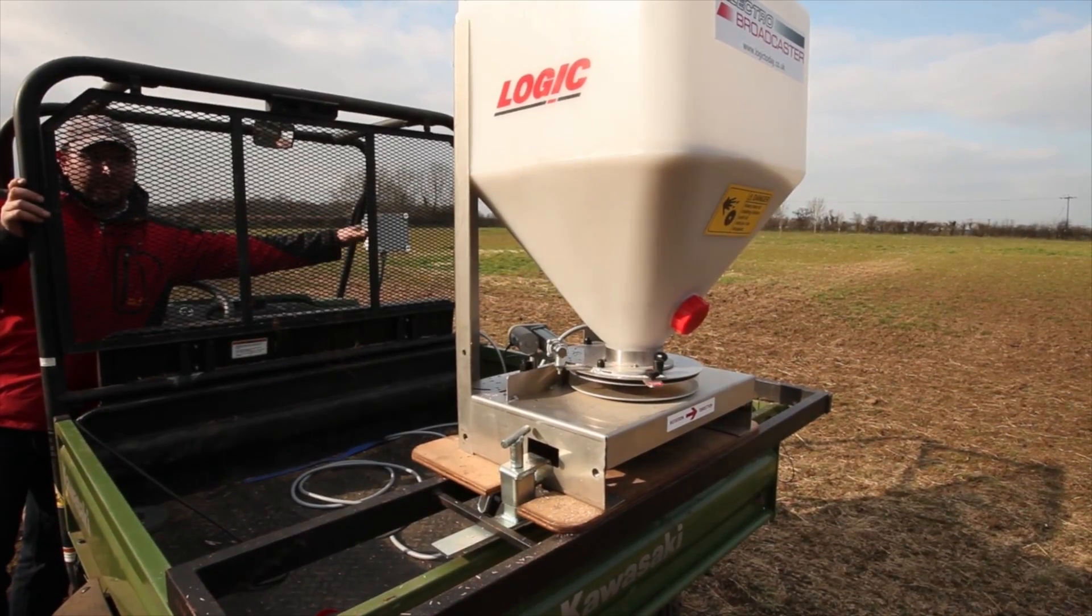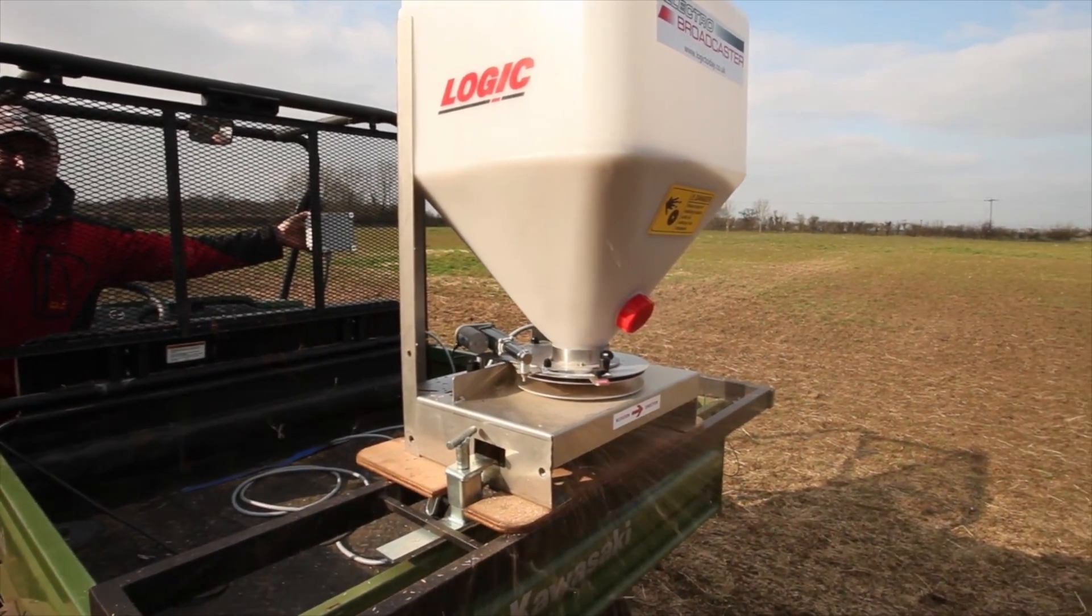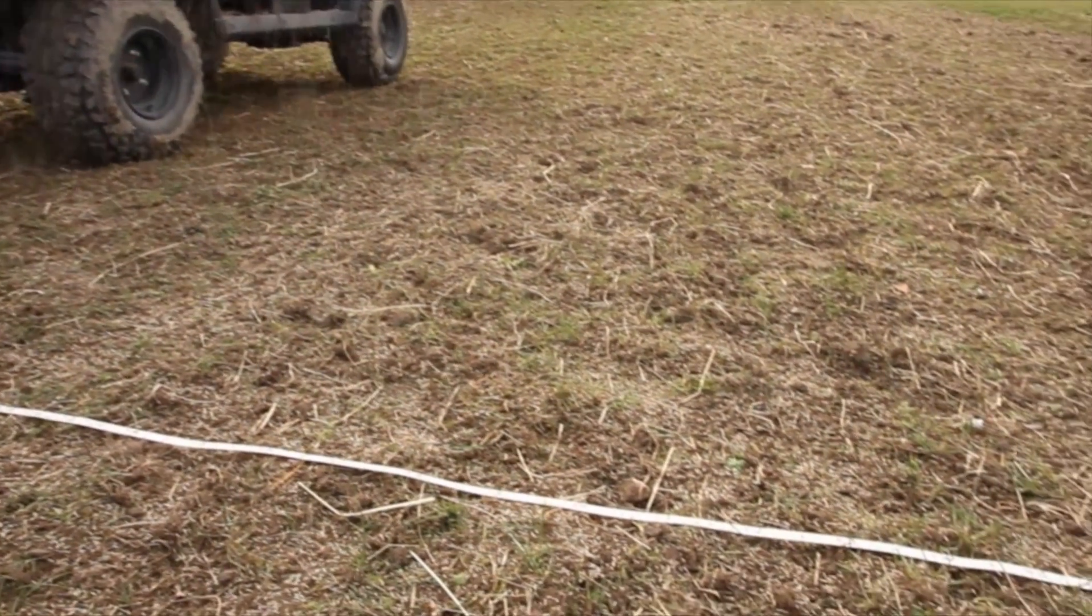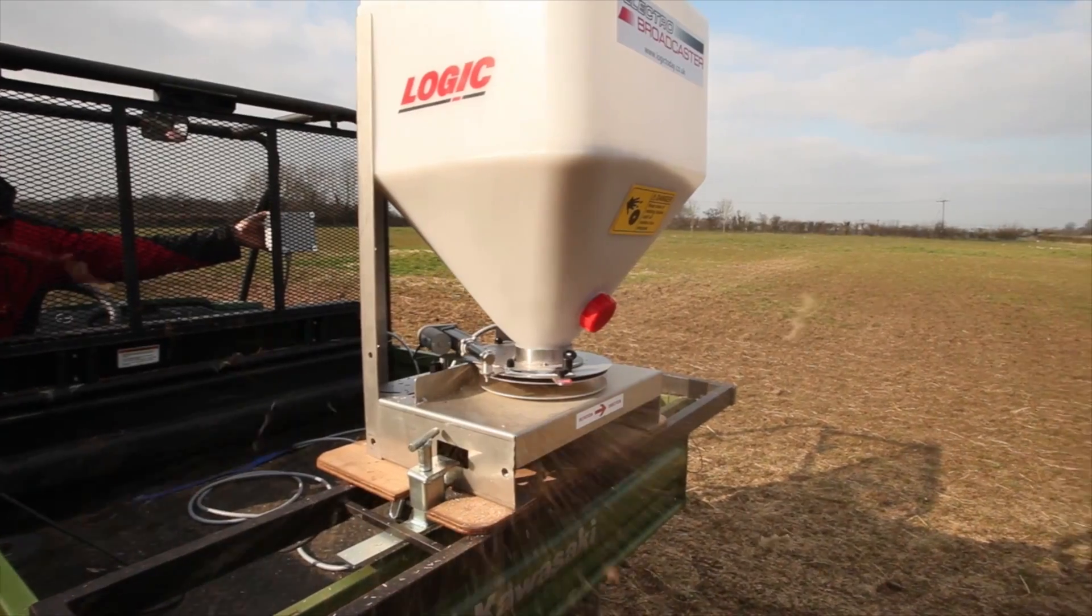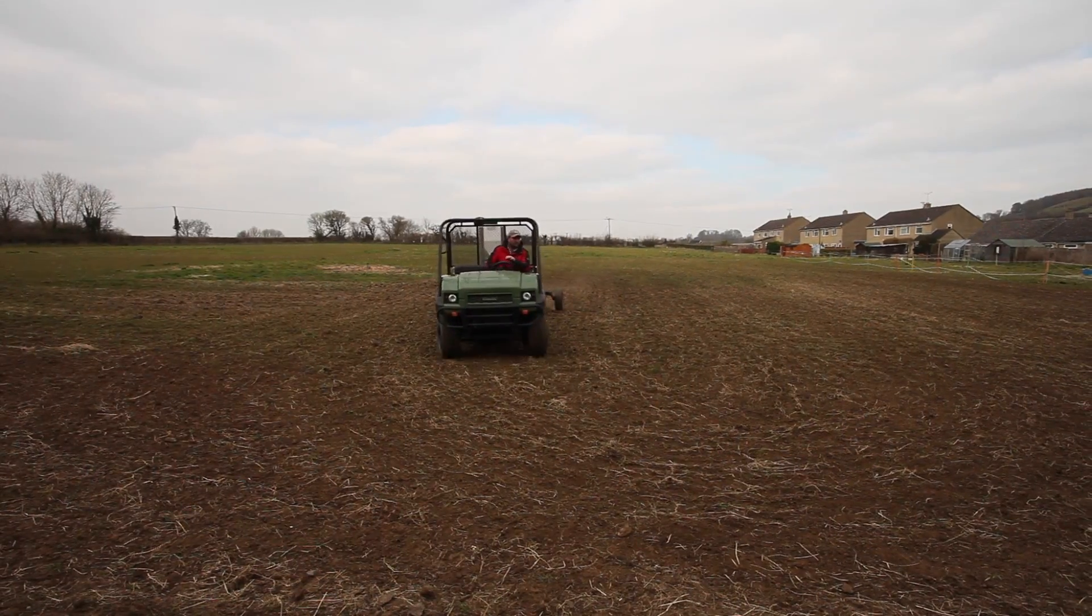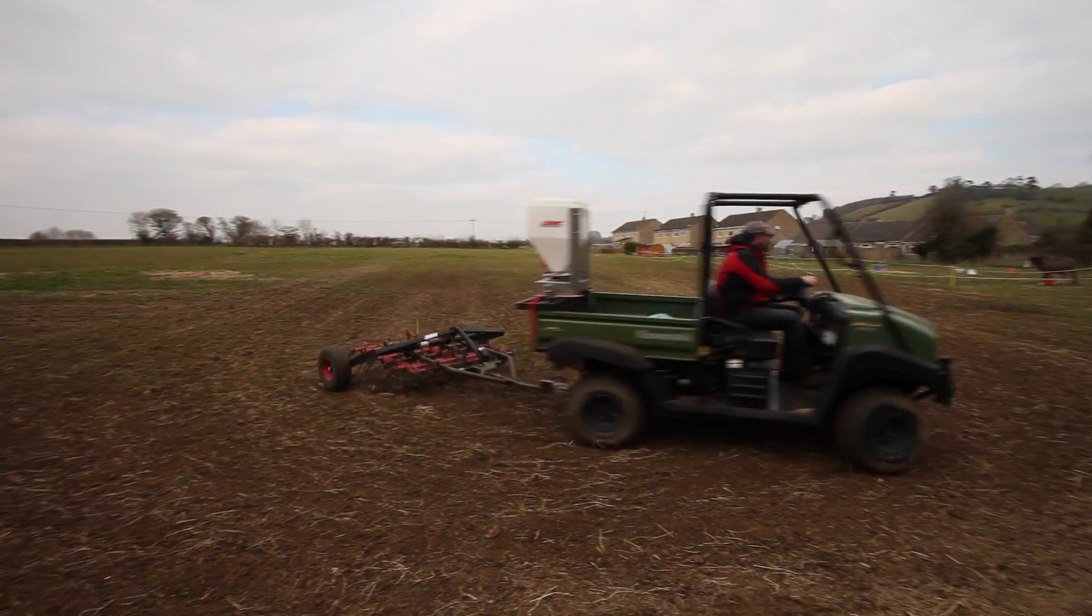This is because the weight of the seed is the limiting factor, so always use the machine at the highest motor speed, unless you want to reduce the width to fit in another implement such as this Logic 2m Harrow, which is being used to patch up badly worn areas of the paddock, whilst the electro-broadcaster is spreading the grass seed at the same time.